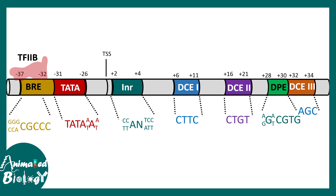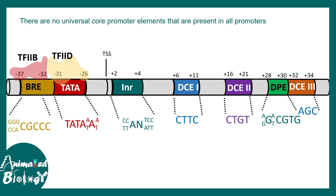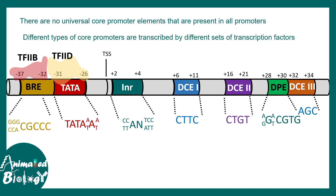There are specific proteins that bind to these promoter elements — for example, TF2B binds specifically to the BRE element, and TF2D binds to the TATA box element. There is no universal core promoter element present in all promoters; one gene may have a particular combination of promoter elements, while a completely different combination can be present in another gene.